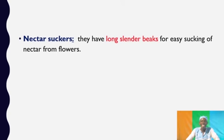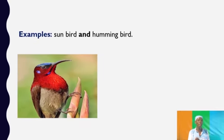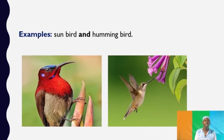We have the nectar suckers. Nectar suckers have a long slender beak which is shown already in the diagram for easy sucking of nectar from flowers. Examples of the nectar suckers include the sunbird and the hummingbird. This is a long slender beak.